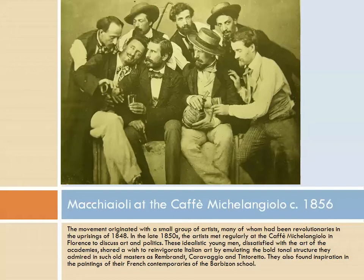They were a group of Italian painters that were active in Tuscany in the second half of the 19th century. They strayed from antiquated conventions taught by Italian art academics and did much of their painting outdoors in order to capture natural light, shade, and colour. This practice relates the Macchiaioli to the French Impressionists, who came to prominence a few years later.